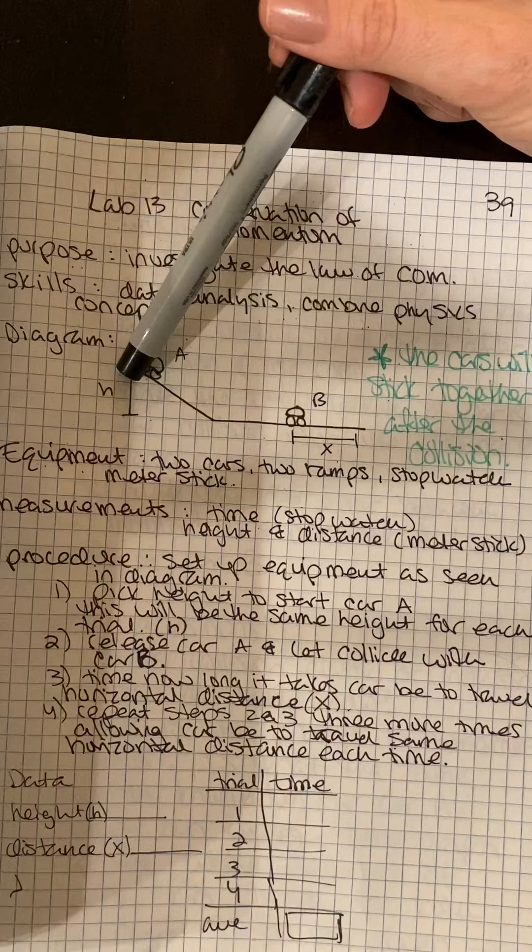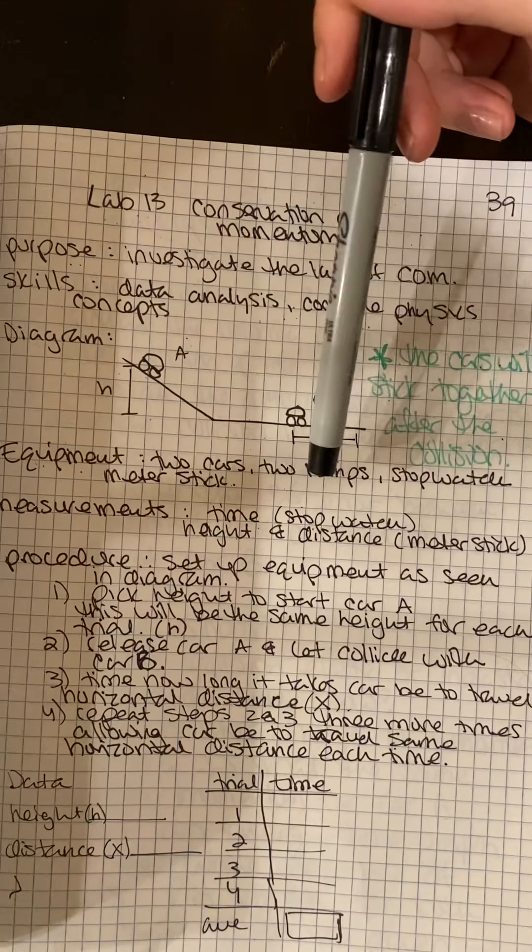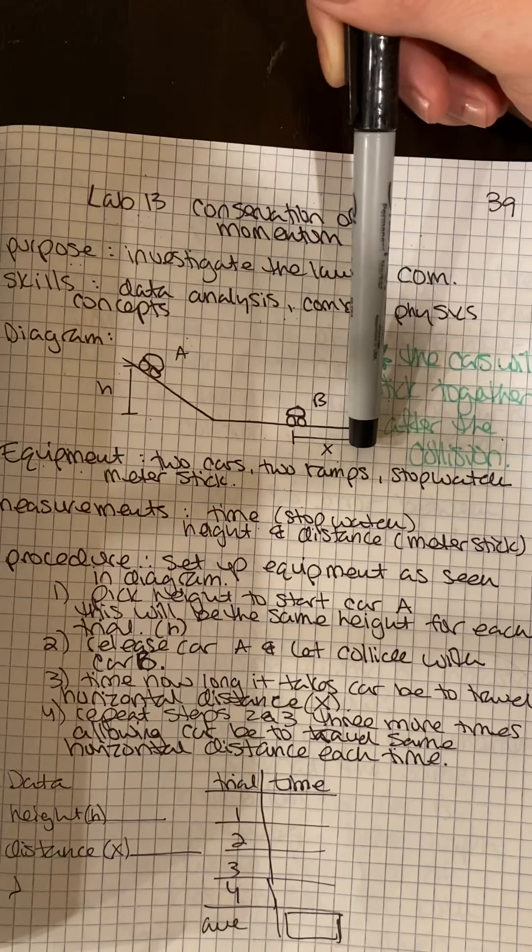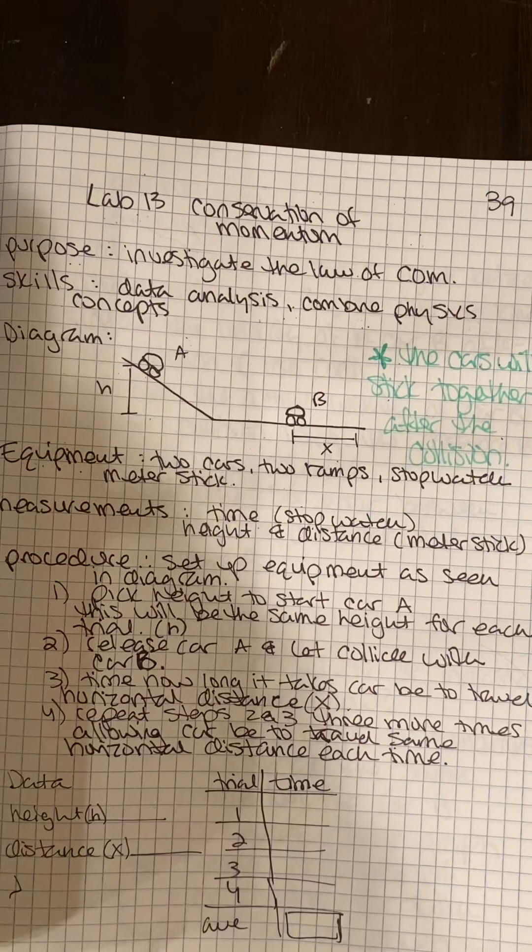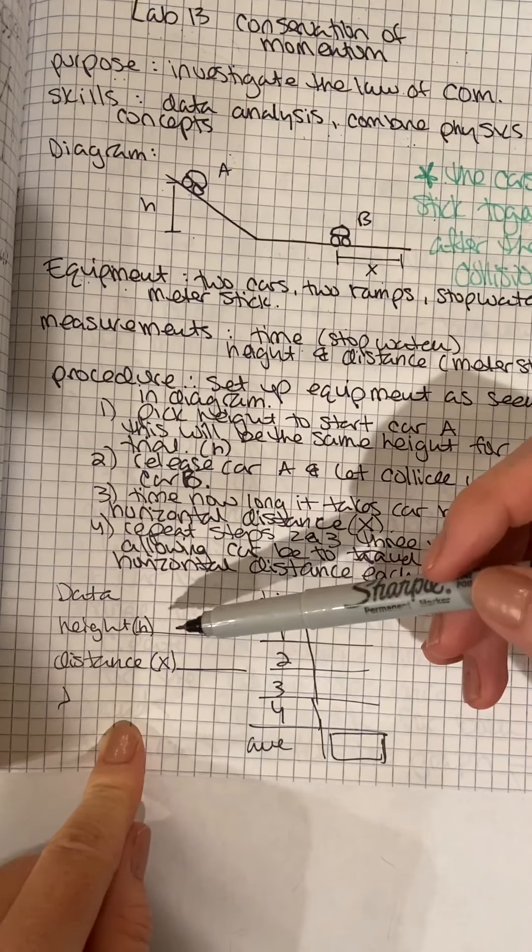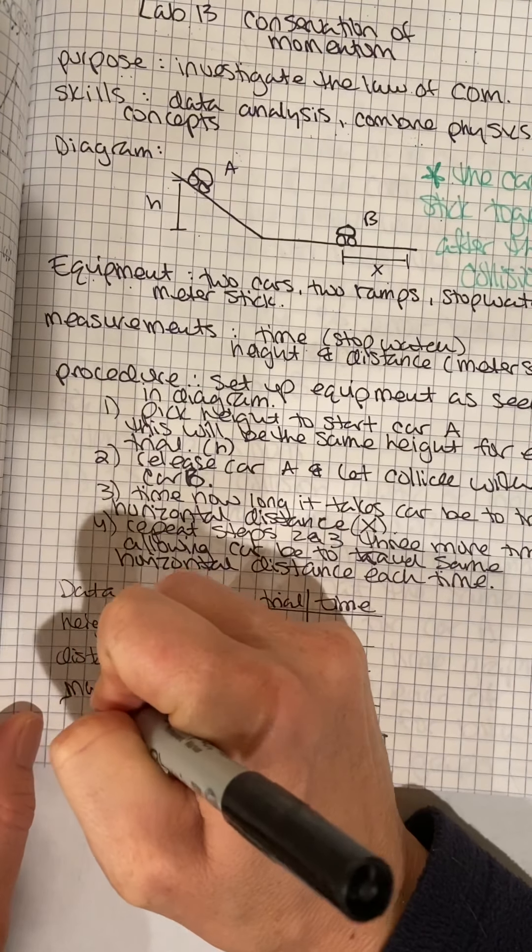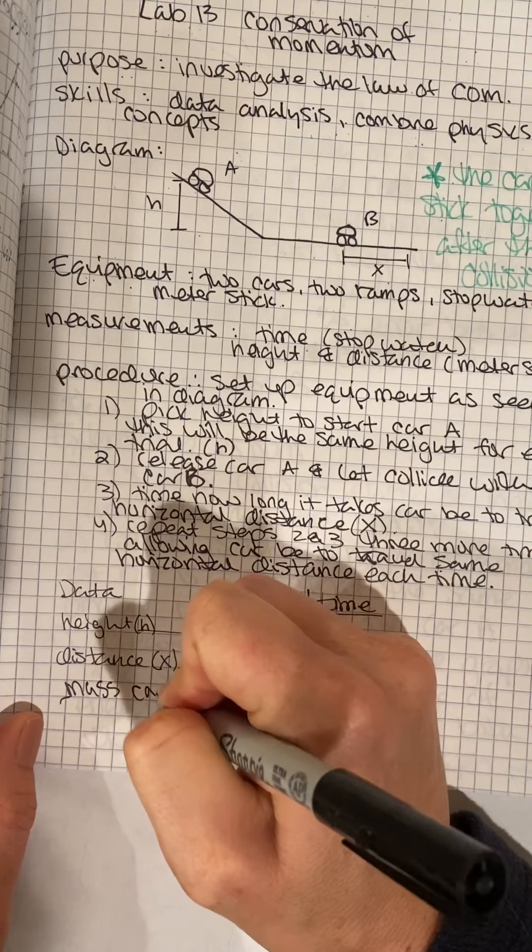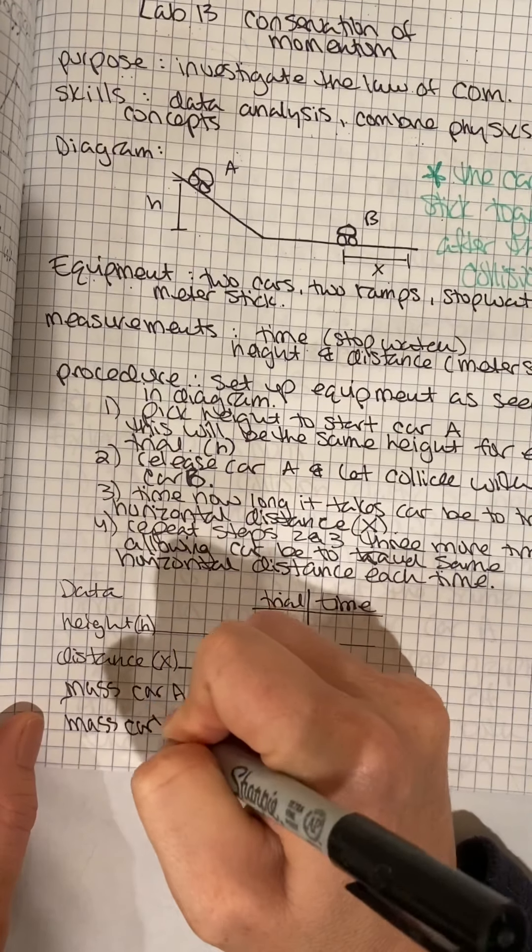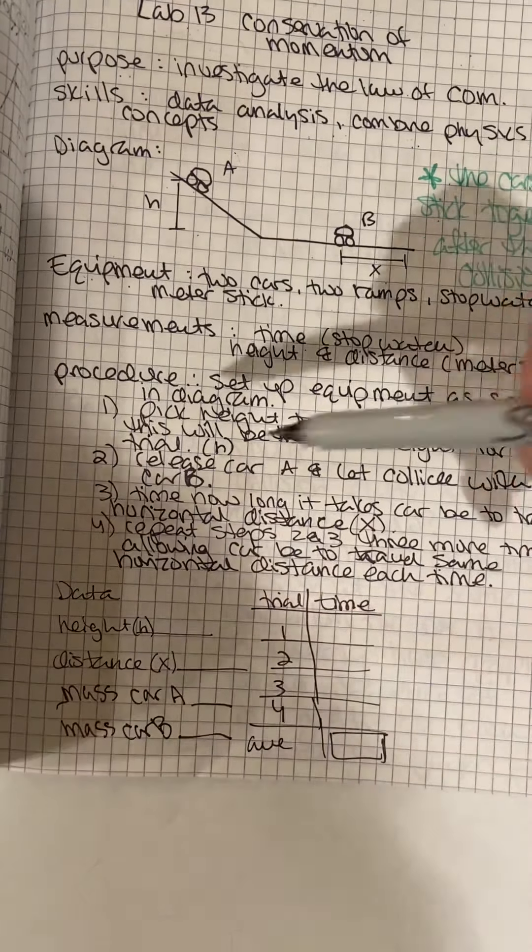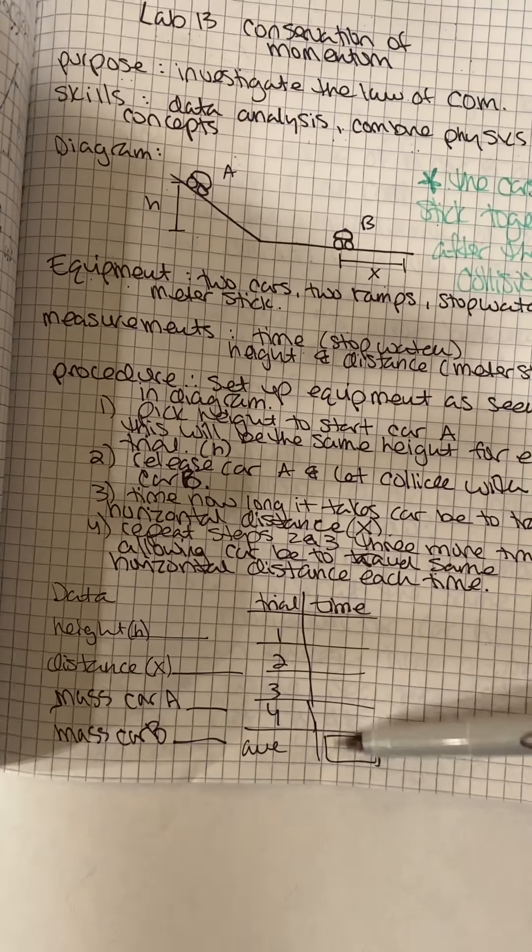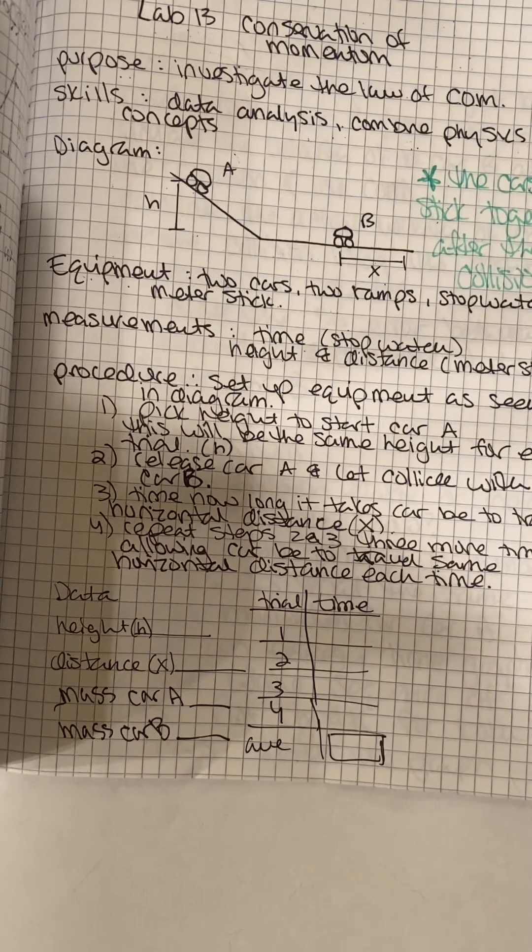This vertical height here that we'll identify as H. And our distance X here, our horizontal distance that we want our two car system to go. I realized we need the mass of our cars. So these things we're going to measure. And then for our times, we're going to take our four trials and find the average. So this is all the information we need for this lab.